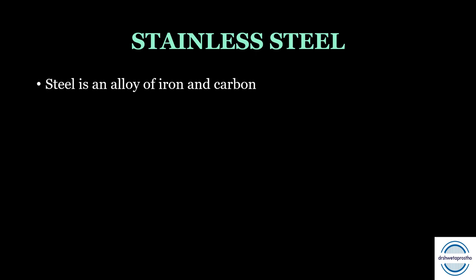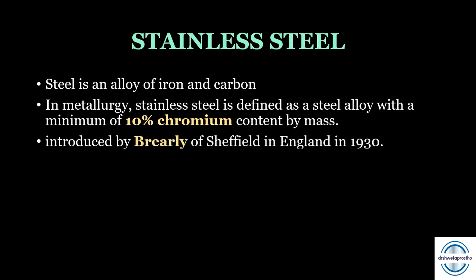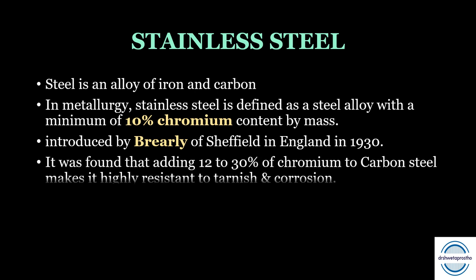The first base metal wrought alloy is stainless steel. Steel is an alloy of iron and carbon. In metallurgy, stainless steel is a special type of steel with a minimum of 10% chromium content by mass. Stainless steel was introduced by Brearley of Sheffield in England in 1930. It was found that adding 12–30% chromium to carbon steel makes it highly resistant to tarnish and corrosion.